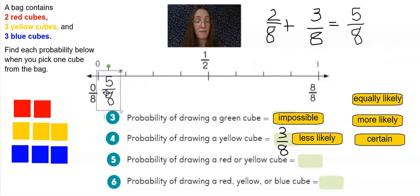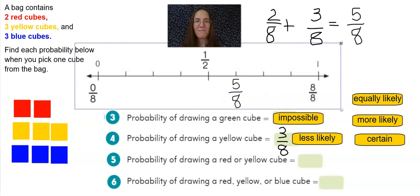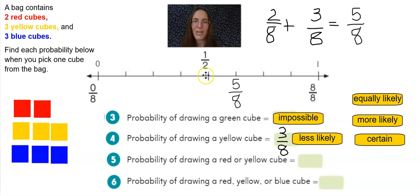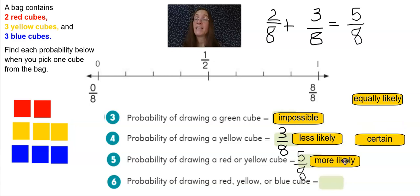Well, let's place five eighths on our fraction number line. Zero eighths, one eighths, two eighths, three eighths, four eighths, five eighths. I can see that five eighths has a better than equal 50-50 chance of being pulled. So I would say that it is more likely for me to get a favorable outcome than not.